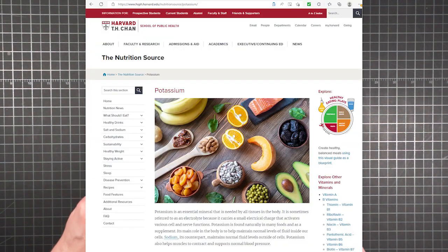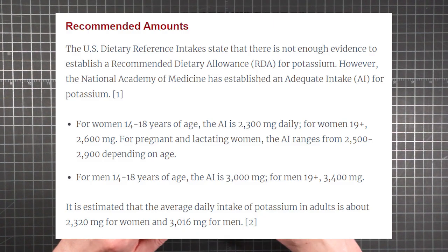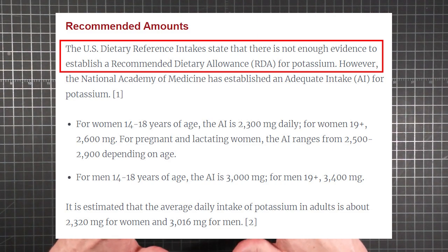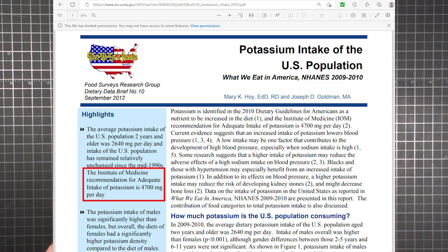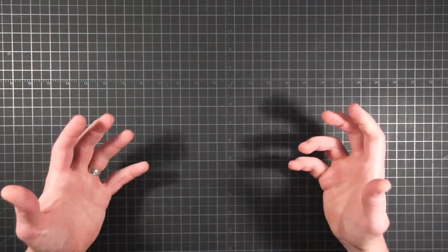Though Harvard School of Public Health has a nutrition article that notes there isn't enough evidence for a recommended dietary allowance for potassium, the USDA says the Institute of Medicine recommendation for adequate intake is up to 4,700 milligrams per day, while simultaneously noting that the average potassium intake in the US is closer to 2,600.